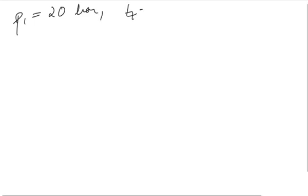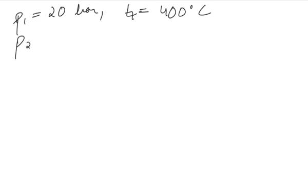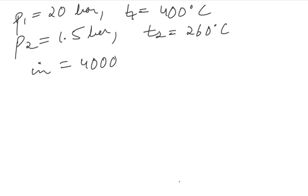Hello everyone, in this question water at pressure p1 equals 20 bar and temperature t1 equals 400 degrees Celsius enters a turbine and exits at 1.5 bar and temperature t2 equals 260 degrees Celsius. The mass flow rate of water is given to be 4000 kg per hour.